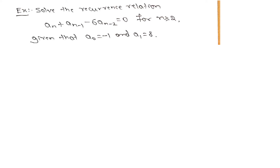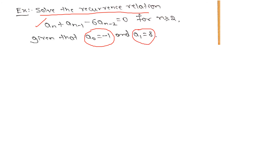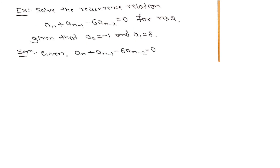So, we saw three cases to solve the problems. Let us take up a problem: solve the recurrence relation for n greater than or equal to 2, given that A0 equals a certain value and A1 equals another value. Two initial values are given and we need to find the solution. Let us take up the given relation.